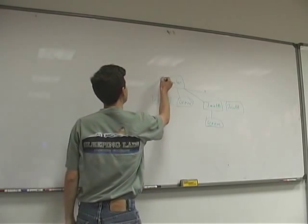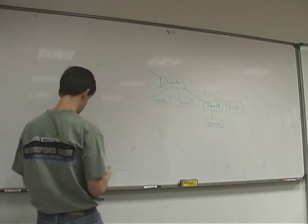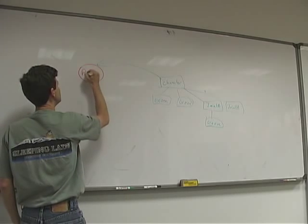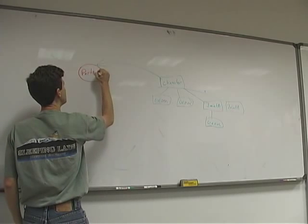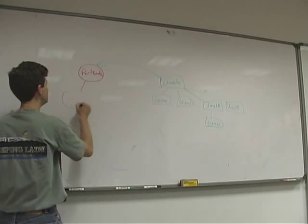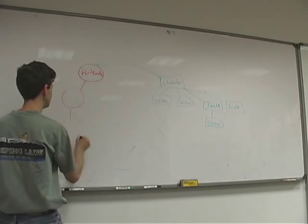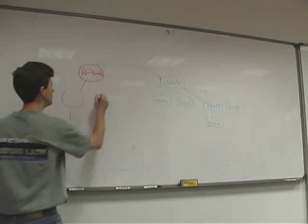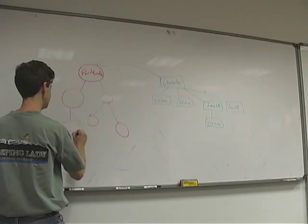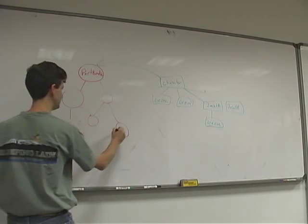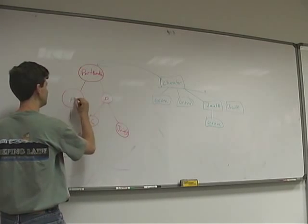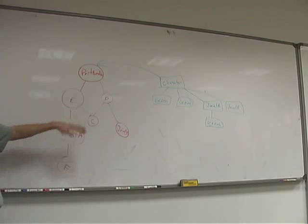Inside the character node itself, it actually stores a pointer to a part bundle. The part bundle has its own hierarchy internally. Inside there — it's not only round but it's also red — there's a part bundle. That's the root of the character joint hierarchy, and this has the full joint structure under it. Down here we may have joint A and joint B. Every joint has a name, and no two joints can have the same name.